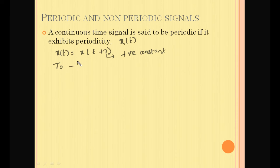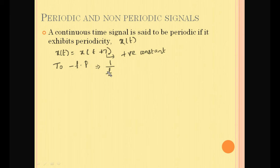It is called the fundamental period. The reciprocal of this fundamental period is called the fundamental frequency, represented by f — that is, f = 1/T₀. This fundamental period represents the duration of one cycle.